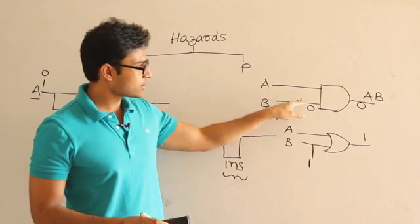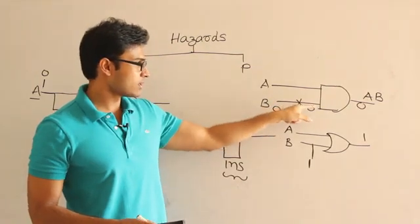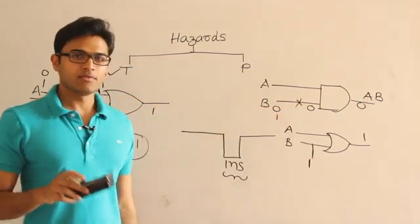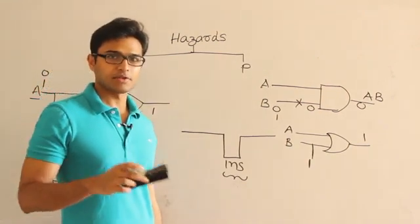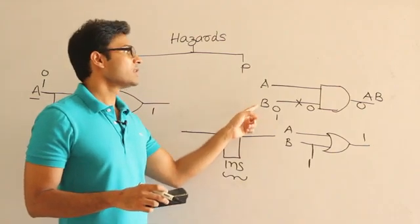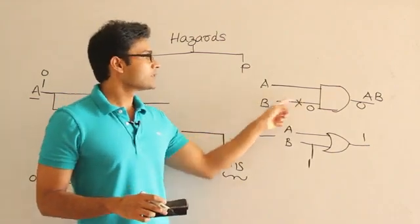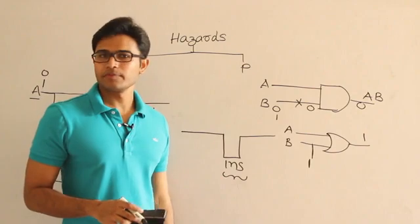It is called as stuck at 1, which means whatever input you give, it is always going to show 1. Now, whenever you want to test whether this one is working or not, we shall use a method called path sensitization.